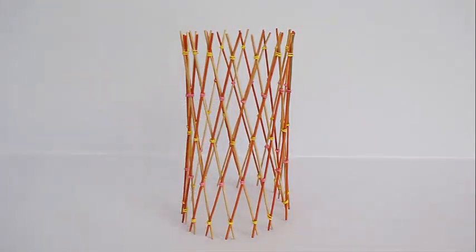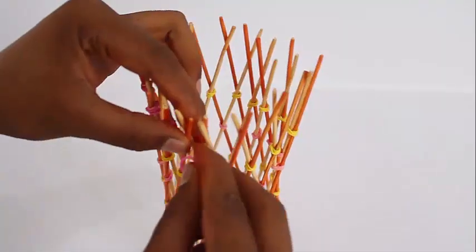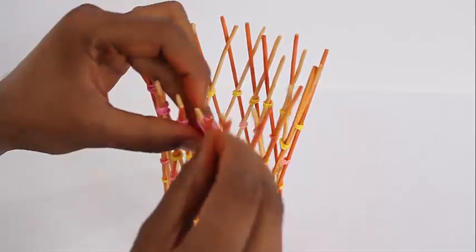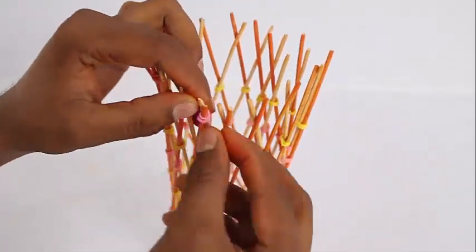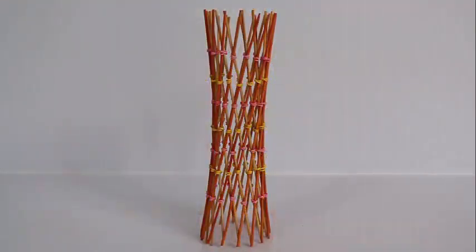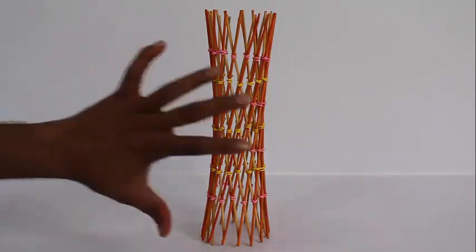You can see that there are five rubber bands. It will always be an odd number. Once again slide the rubber bands down and place one more rubber band on the top and another one below. And this way you would get a trellis with seven rubber bands. It will always be an odd number.